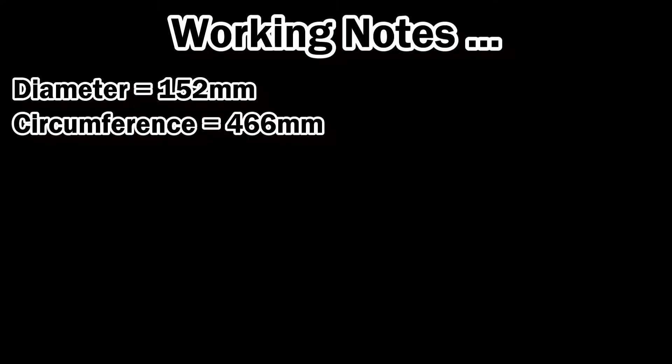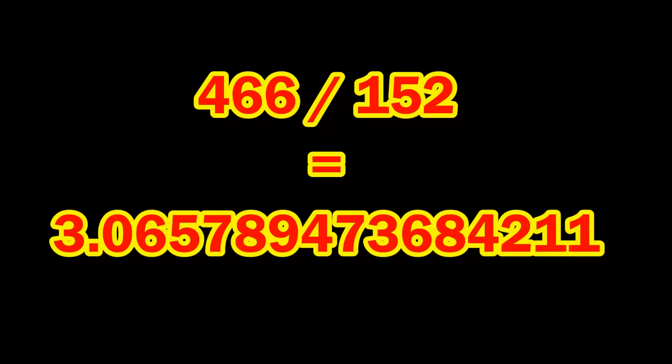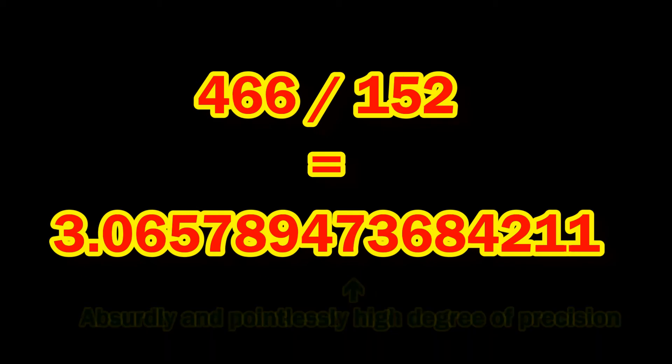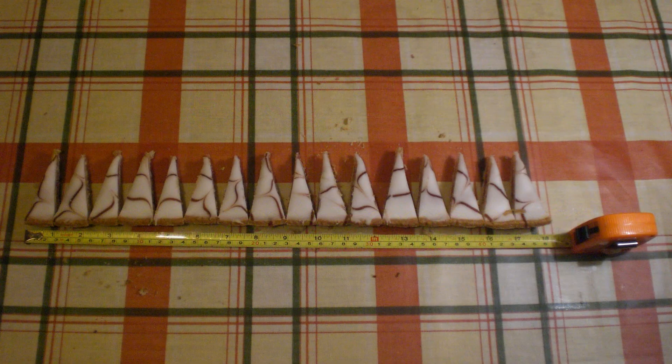Circumference is pi times the diameter, therefore pi is the circumference divided by the diameter. 466 divided by 152 is 3.06578947, etc. Now, we know that's not exactly right, but let's carry on.